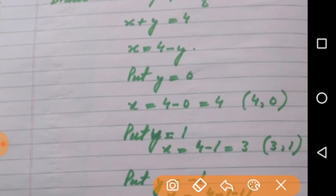We will keep x here and y will be transposed on right hand side as minus y. So we will get x is equal to 4 minus y. In place of y you will put values and we will get the value of x accordingly.